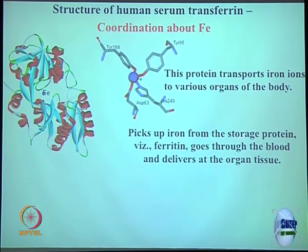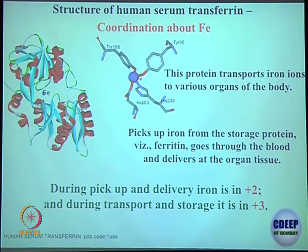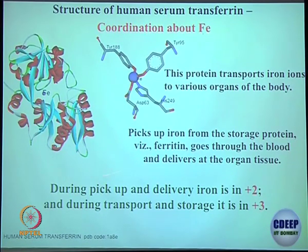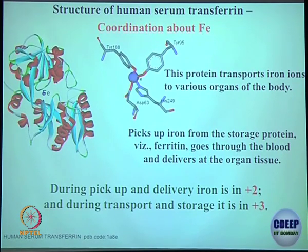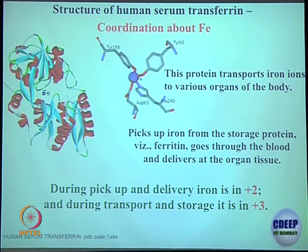It gets delivered at a certain point where it can be stored, picking up iron from storage iron protein. What we usually see is that iron centers are in the Fe²⁺ state during pickup and delivery time, during transport. During storage it is stabilized in the Fe³⁺ state, because Fe³⁺ is the oxidized, slightly more stable state. So their redox chemistry is used for transport as well.